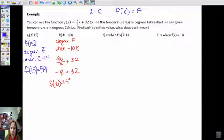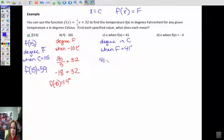Changing it up a little bit, x when f of x is 41. Well, f of x is a degree in Fahrenheit. So now x is going to be the degree in Celsius when Fahrenheit is 41 degrees. 41 degrees, not 40. So to do that, we're going to put 41 in for f of x instead of x. So 41 will equal 9 fifths of x plus 32.